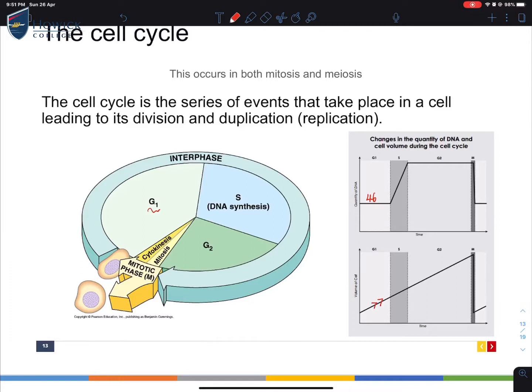The S phase is the synthesis phase, also known as DNA synthesis. This is where DNA replication occurs. What you're going to end up with is 46 chromosomes becoming 92 chromosomes. The cell volume actually increases as well, so it's continued increasing.